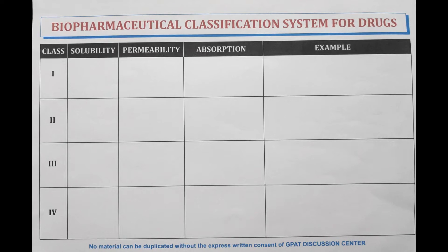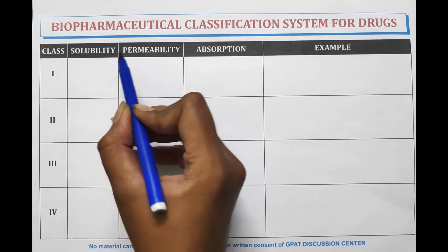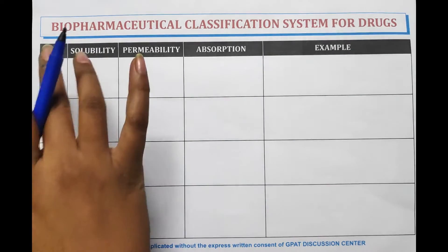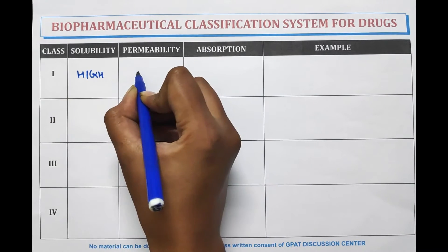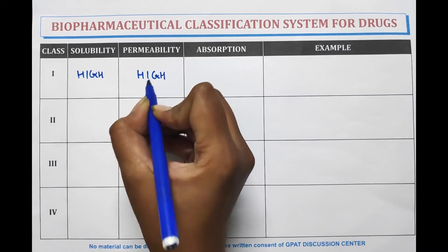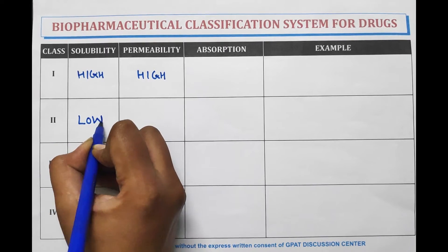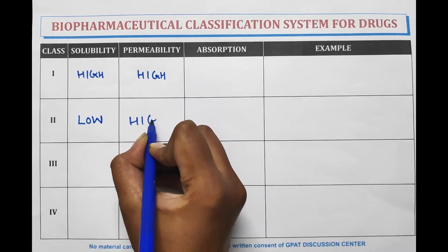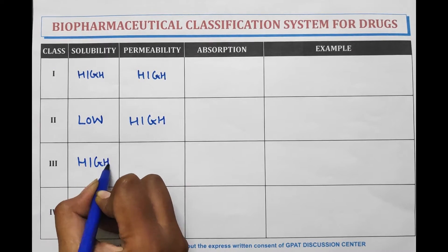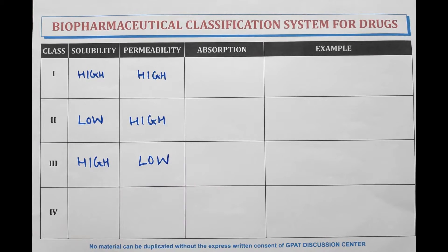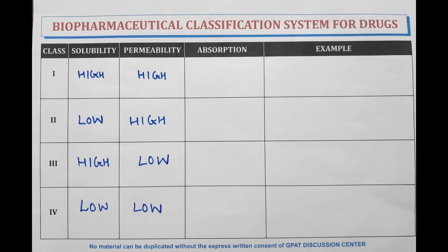Four types of classes are there: first, second, third, and fourth. These classes are categorized by solubility and permeability. Class one has high solubility and high permeability. Class two has low solubility and high permeability. Class three has high solubility and low permeability. Class four has low solubility as well as low permeability.